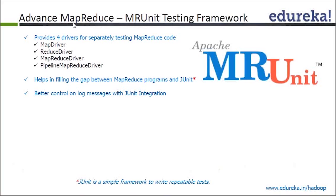MRUnit provides a test driver that accepts your input and output data set from the program. It validates the correct behavior of the mapper and the reducer, and then gives you the current output — whether the mapper or reducer succeeded or failed when you ran it.